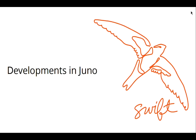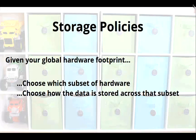What have we been working on, and what are we looking at working on over the next several months as we finish up the OpenStack Juno cycle? There are a couple of major things I'm going to talk about: storage policies and erasure codes in Swift.